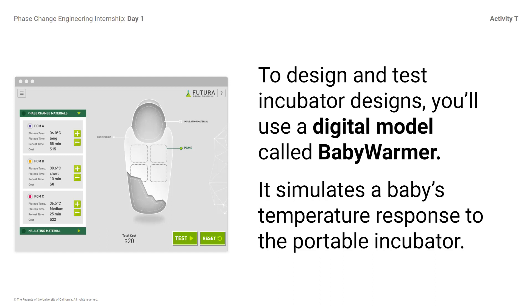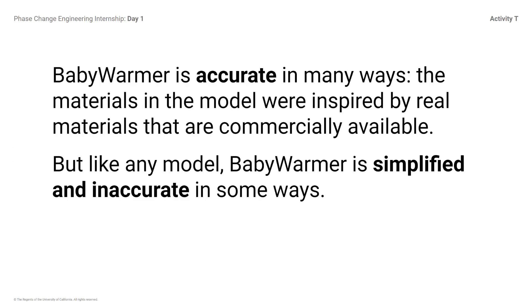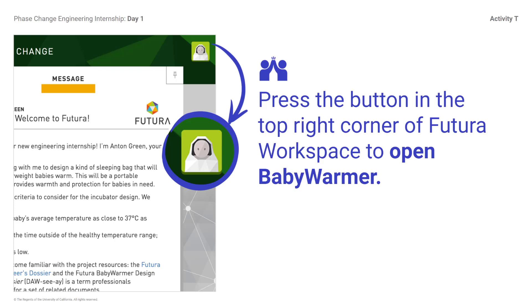At Futura, you will be using a computer simulation to test your designs. Engineers use models like Baby Warmer to predict what will happen — they can change variables and see what outcomes result. Baby Warmer is a scientific model; scientists often make and use models to study things they cannot measure directly, changing variables to predict outcomes in the real world under similar conditions. Baby Warmer is accurate in many ways — the materials in the model were inspired by real commercially available materials — but like any model, it is simplified and accurate only in some ways. Press the button on the top right corner of Futura Workspace to open Baby Warmer.